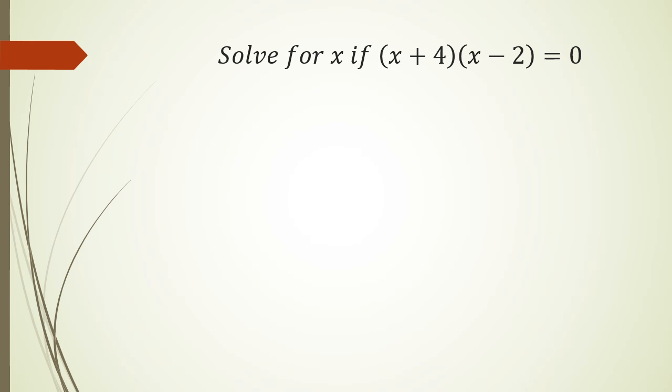Imagine this: solve for x if (x+4)(x-2) = 0. Now one of the things you need to remember about multiplying two numbers and the answer being zero is one of those numbers has to be zero.